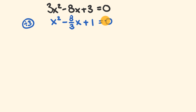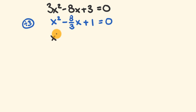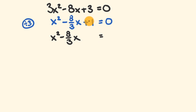The next step: we are going to rewrite this equation, keeping all the x terms on the left, and we're going to move the constant over to the right-hand side. So we have the x terms: x squared minus 8 over 3x. We're going to leave a bit of space — we'll use that in a little bit. Now we subtract 1 from both sides, which cancels it on the left and gives us negative 1 on the right.